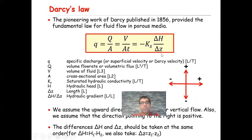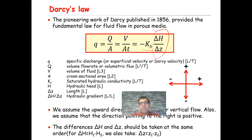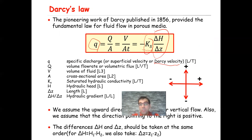Darcy's Law is expressed as q (the Darcy velocity) equals Q (volumetric flow rate) divided by the cross-sectional area A of the column, where Q equals V (volume of collected water) divided by time, times A. Darcy's experiment found that this volumetric flow rate is proportional to the applied hydraulic gradient, and the constant of proportionality is the saturated hydraulic conductivity Ks. Since delta H is hydraulic head with dimension of length and delta Z is also length, delta H over delta Z is dimensionless. The Darcy velocity q — also called specific discharge or superficial velocity — has dimensions of length per time, so Ks also has units of length per time.